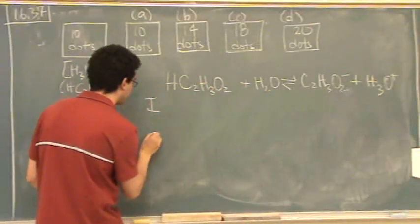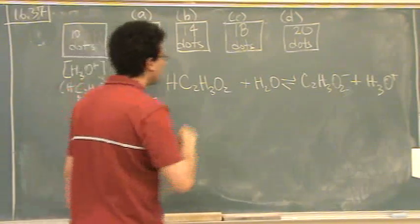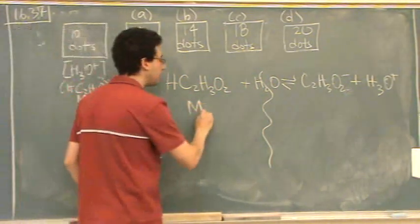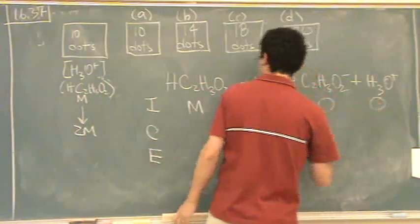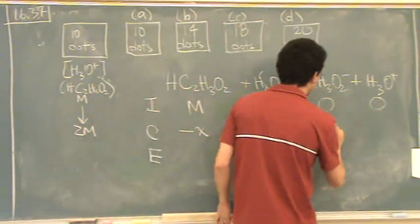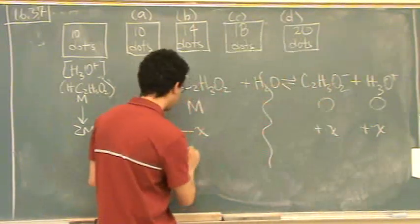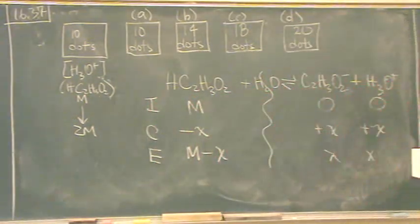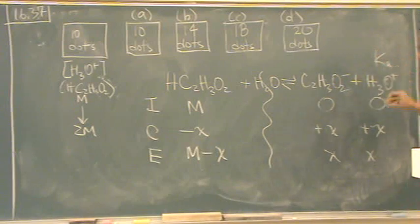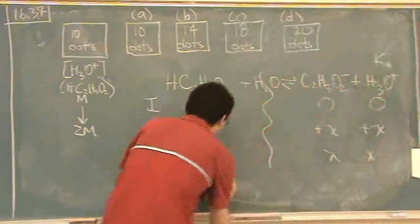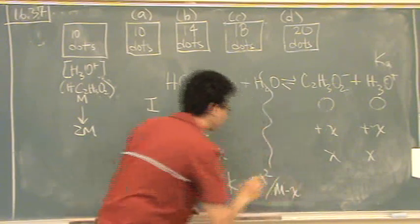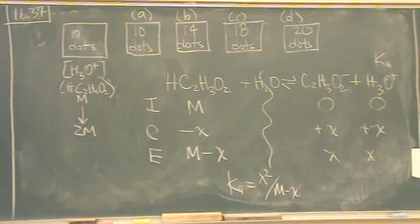ICE. Ignore the water. Don't need that one. The initial concentration is M. So this is zero and zero. It has to go to the right, minus X, plus X, plus X. So this is M minus X, X, and X. Oh, you've also got to look up the Ka, this has a certain Ka, we'll worry about it in a second. So then, Ka is equal to X squared over M minus X. The products over the reactants.